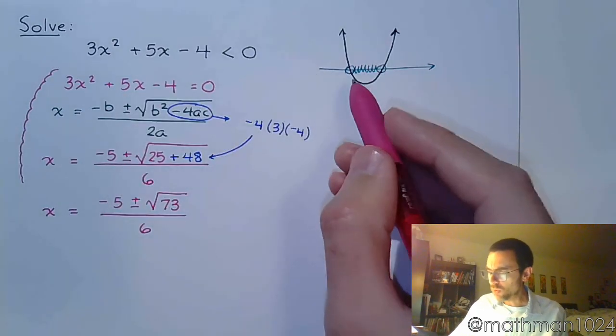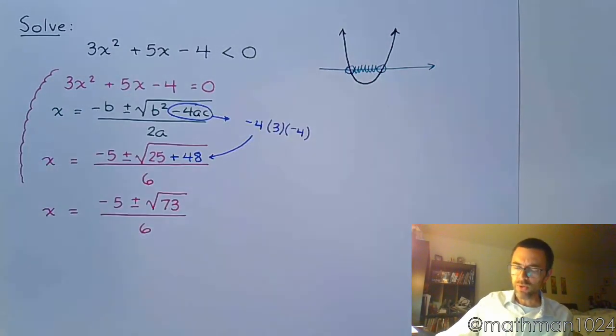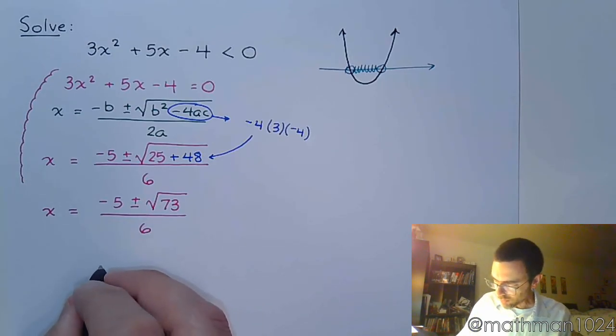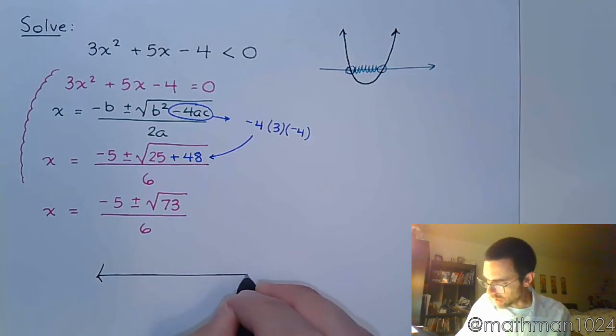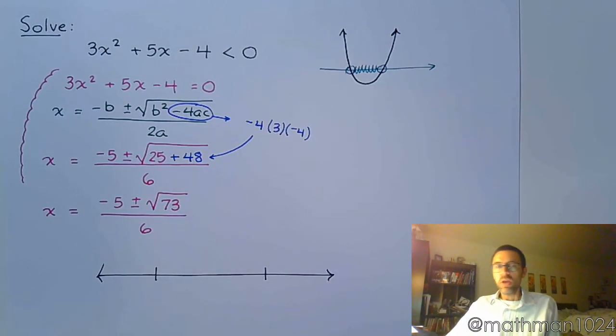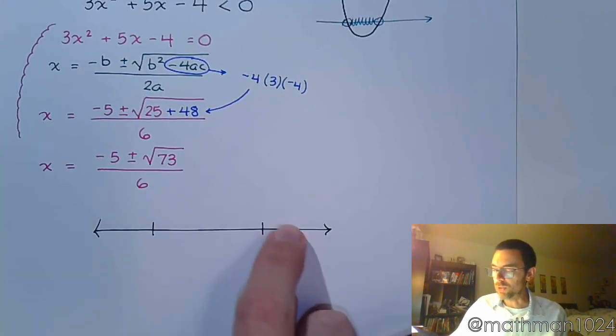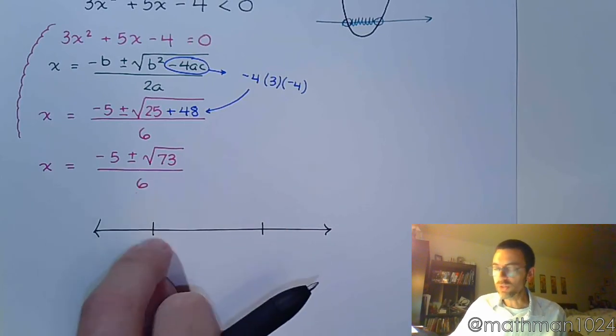Well, how do I know which one is which, right? So we know on the number line, I'm going to have one of these guys with the plus and one with the minus. Well, make it really easy for you. The plus part is going to be the one on the right, and the minus is the one on the left.